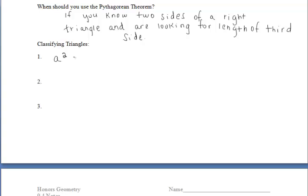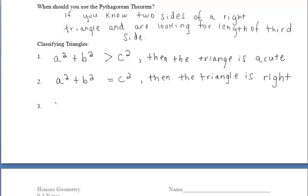We can use the Pythagorean theorem to help us classify triangles. So if we do A squared plus B squared, and that's greater than C squared, our triangle is acute. If we do A squared plus B squared, and that's equal to C squared, the triangle is right. And if we do A squared plus B squared and figure out that that's less than C squared, then we can say that the triangle is obtuse.